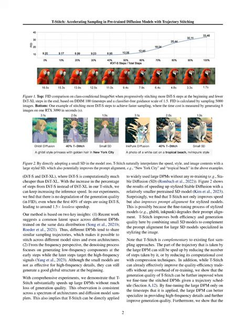We introduce trajectory stitching, T-Stitch, as a novel strategy to enhance the efficiency of diffusion probabilistic models, DPMs. By dynamically allocating computation to different denoising steps using DPMs of varying sizes, we achieve significant speed improvements without compromising generation quality. Through experiments, we demonstrate that T-Stitch is versatile across different model architectures and samplers, offering a valuable complement to existing fast sampling methods and showcasing improved quality-efficiency trade-offs without the need for retraining.